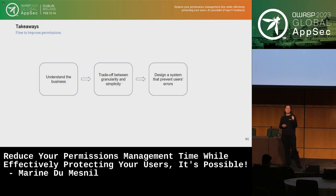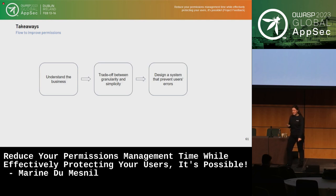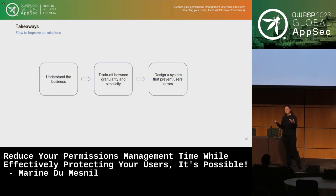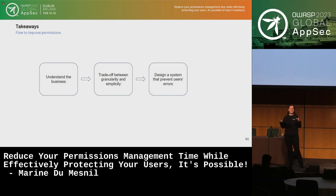The takeaways from this talk: first, you really need to understand your business. We had many discussions because of bugs — it was bad to have all those bugs, but they helped us understand what was needed for our admins. Even after we implemented those groups, we still had to evolve with the business. It's always a trade-off between granularity and simplicity. We built an app with thousands of rights and decided to keep only two permissions for admins — but those were the ones needed for them to work. Design a system that prevents user error: in our case, they only had those two permissions and didn't have to understand everything behind it.